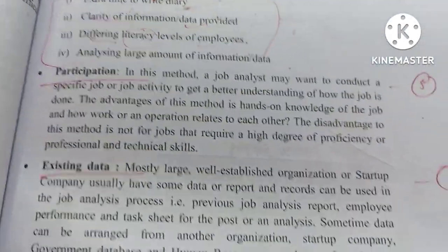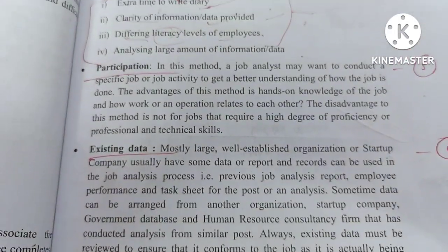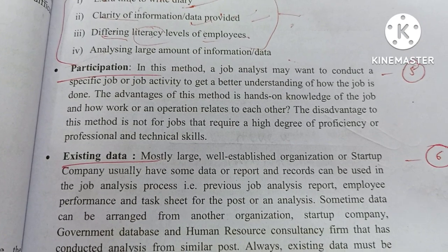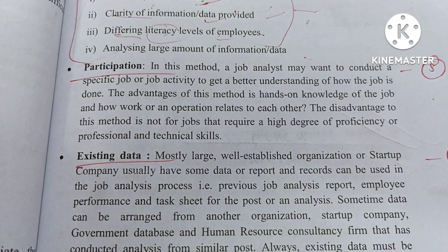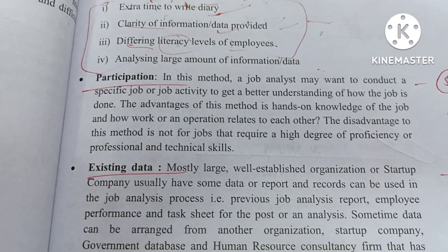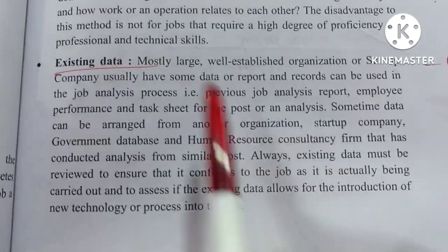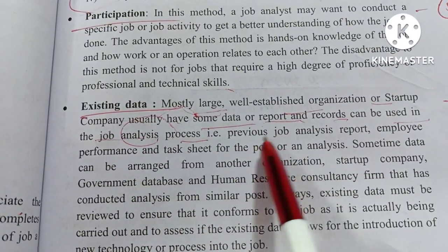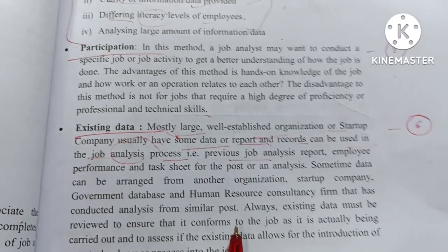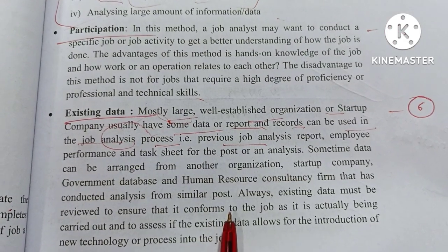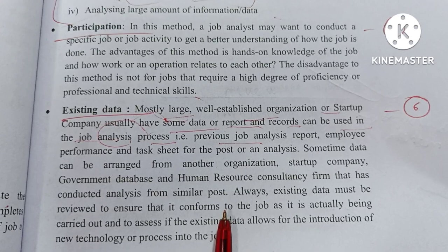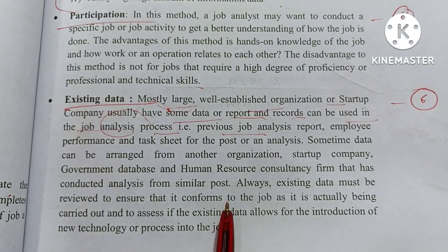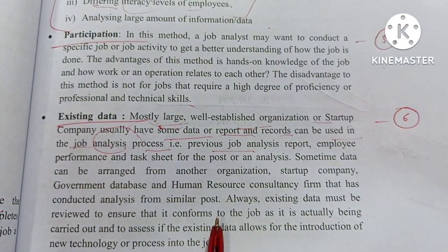Next is participation and existing data. Participation means you perform a specific job activity — like a debate or entertainment activity — and you observe how many people participate and assess the professionals' technical skills and communication. Existing data: most large, well-established organizations and startup companies have data reports and records that can be used in the job analysis process. Many reputed companies have record data from their first batch — how many employees, trainees, opportunities given, and how much output employees are currently producing for the company's growth and development.